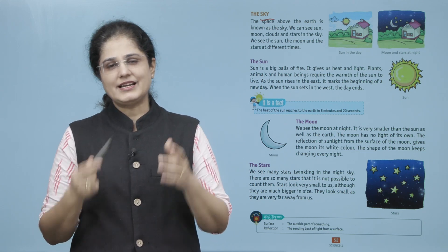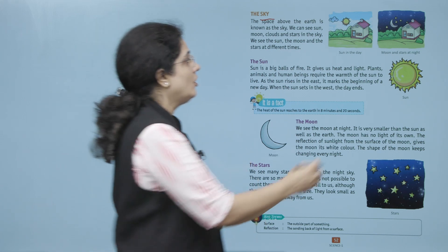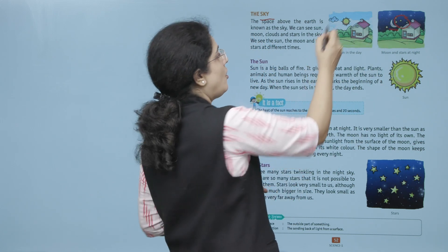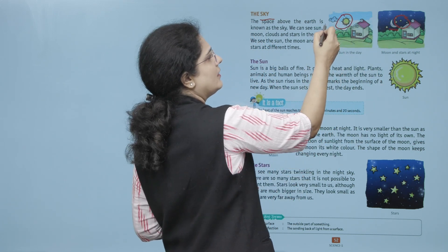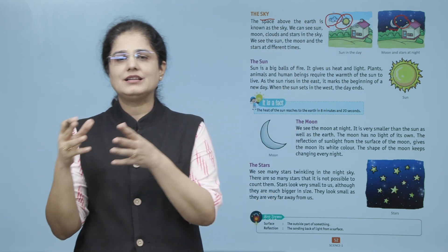Agar aap upar aasman mein dekhenge to aapko chand bhi nazar aayega, taare bhi nazar aayenge aur suraj bhi nazar aayega. Kabhi kabhi aapko badal bhi nazar aayenge lekin ye sab jo hain alag alag time pe nazar aata hai.